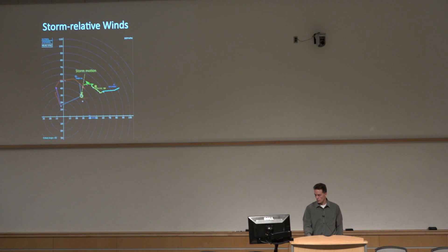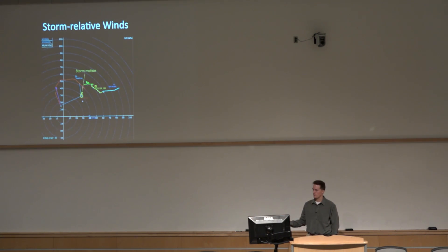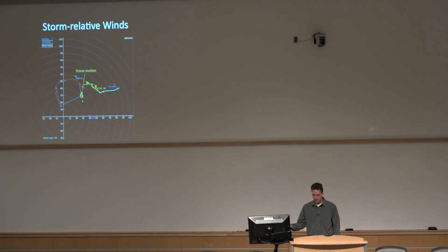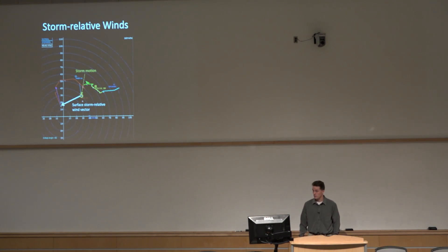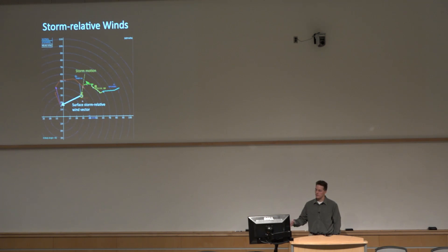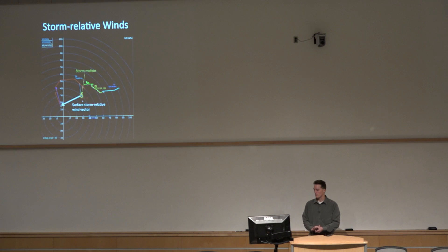Storm-relative winds are important. We're using an assumed right-moving supercell motion here — that's the Bunkers motion or the internal dynamics method. The storm-relative wind is just the vector from the storm motion back to the hodograph at whatever level you're interested in. In this case, the storm-relative wind at the surface is out of the east-northeast.